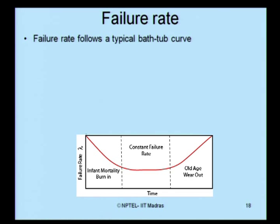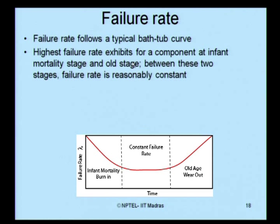The failure rate follows a typical bathtub curve. The highest failure rate exhibits for a component at the infant mortality stage and at the old age stage. A component that is just new has the highest failure rate just before it is introduced in the system. Once the component starts working effectively, the failure rate keeps decreasing. For a specific period of effective functioning, the failure rate remains practically constant. Then, due to malfunctioning after a large elapse of time — maybe one or two years depending on the component — the failure rate keeps increasing. This increasing phase is what we call old age wear-out failure, and the initial high phase is infant mortality.